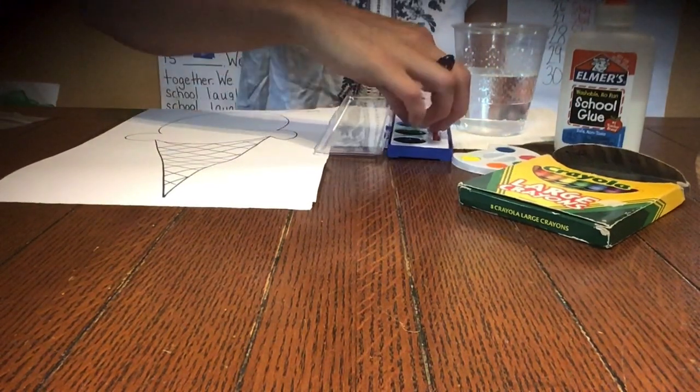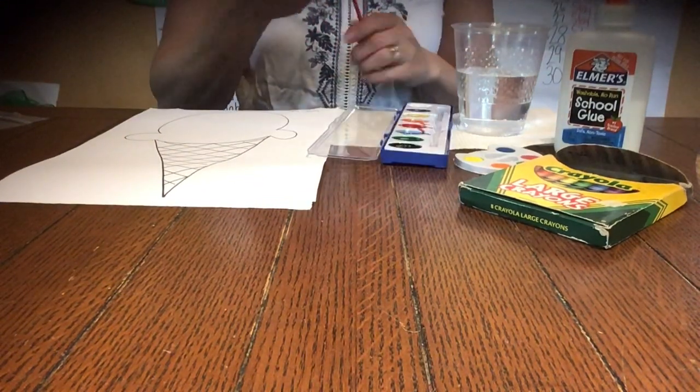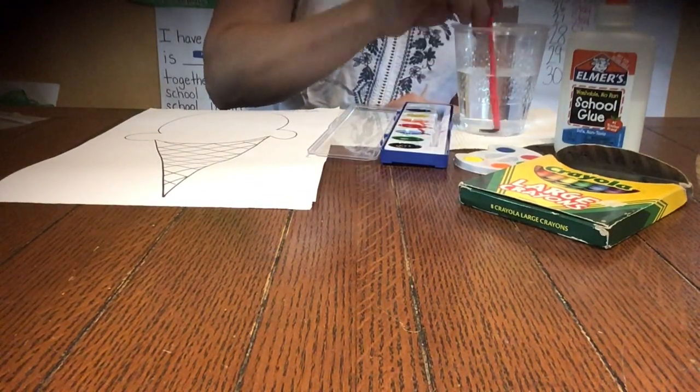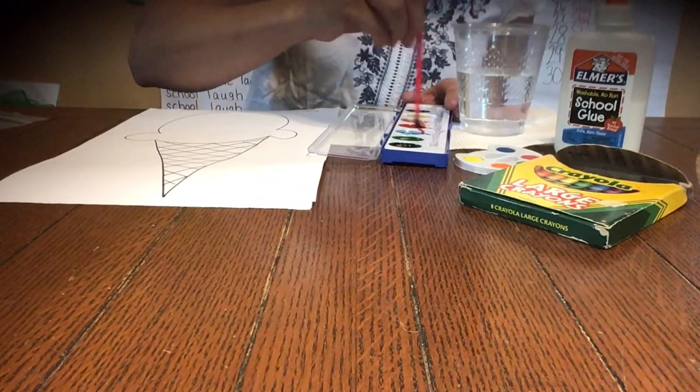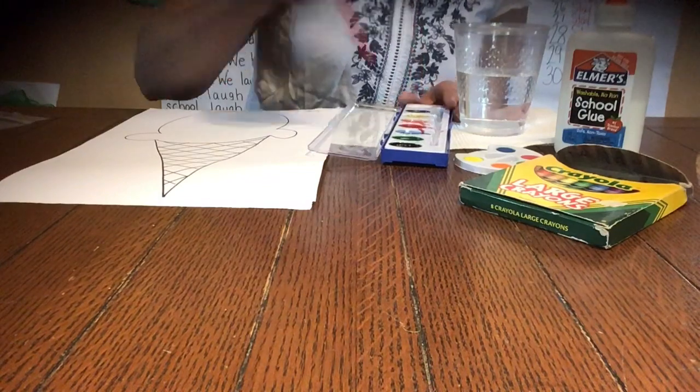Get out your paintbrush. I'm going to do mine my favorite kind of ice cream. Mine's strawberry. So what am I going to use for strawberry? Red! I'm going to make mine red.